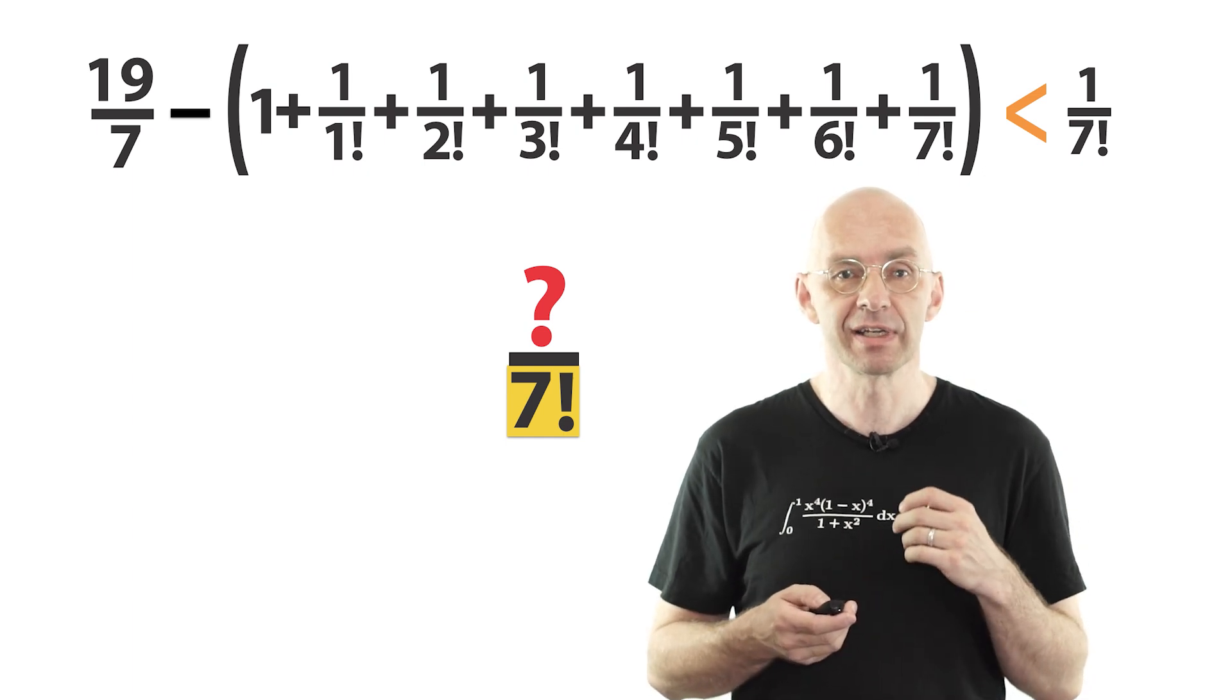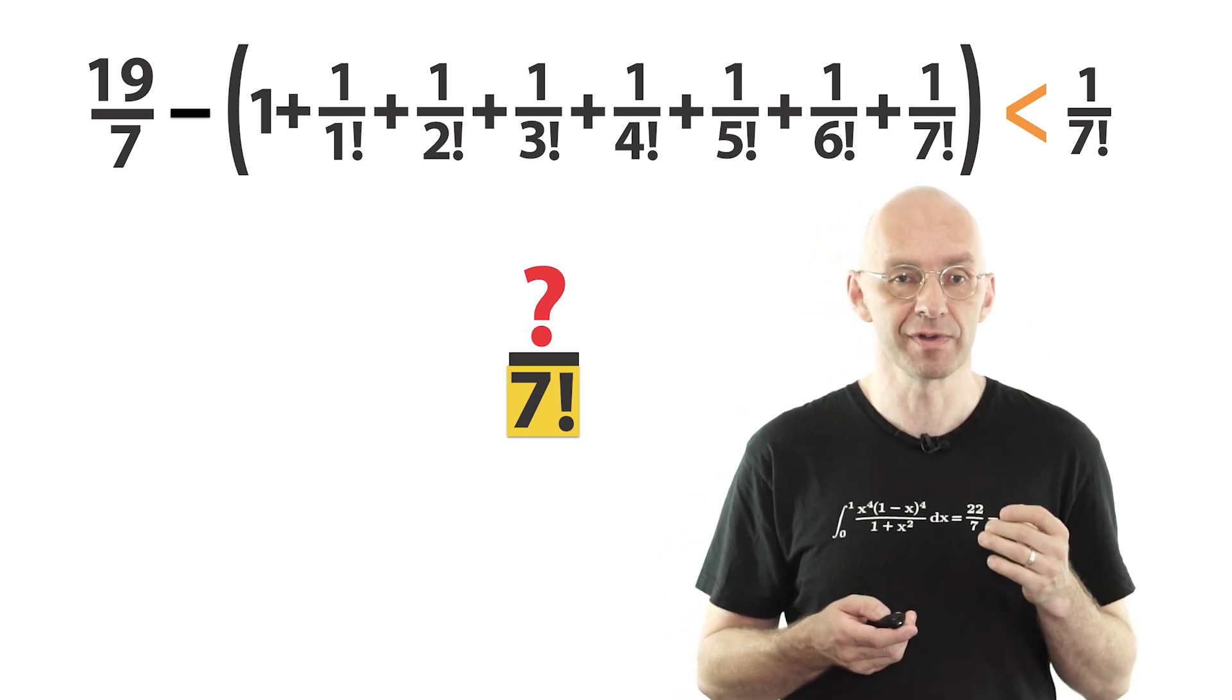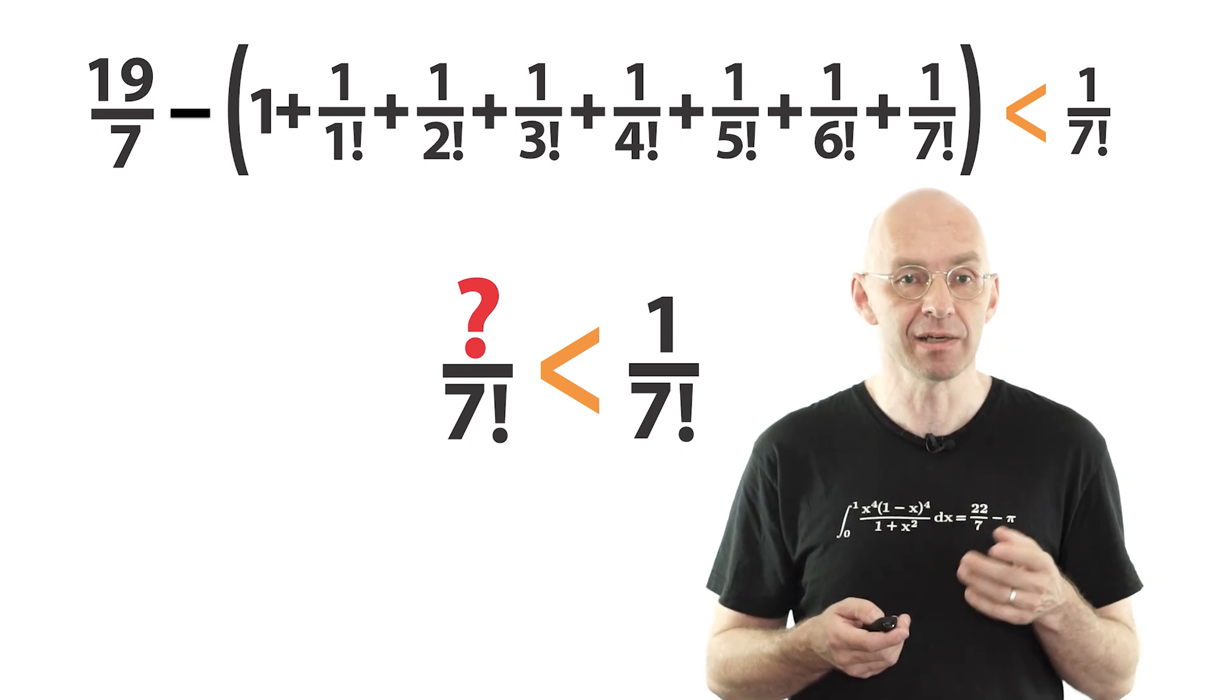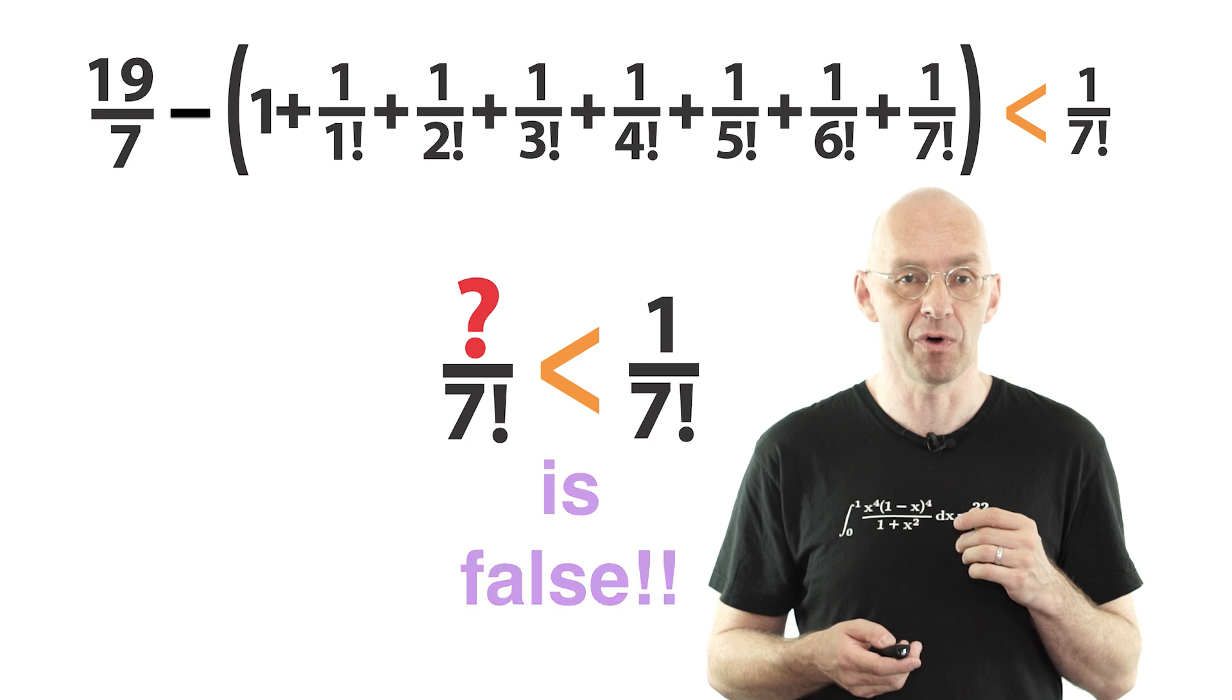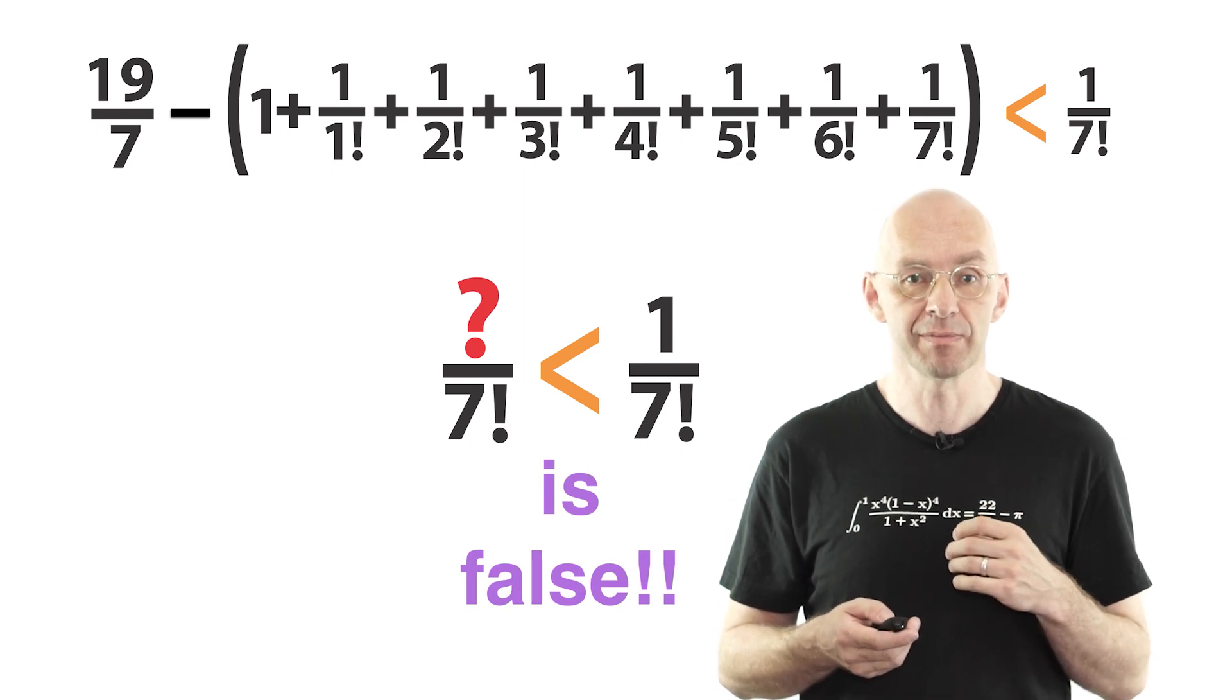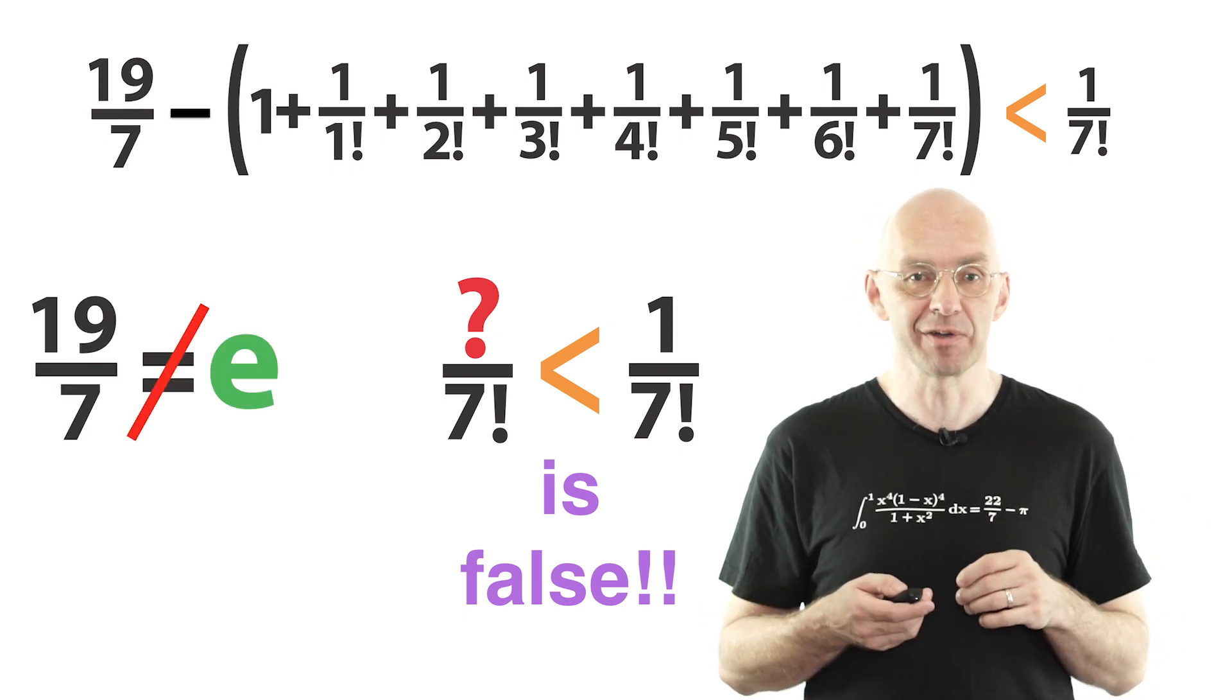So, our assumption that 19 over 7 is equal to e implies a statement that is obviously false. So, this means that our assumption that 19 over 7 is equal to e must have been false to start with. Tada! You probably didn't see that coming, right?